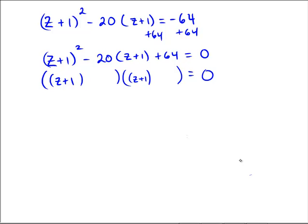Of course, two numbers that add to negative 20 and multiply to 64 would be minus 16 and minus 4. So now, using what we've done with other zero product property problems, we can say that z plus 1 must be equal to 16 or z plus 1 must be equal to 4.